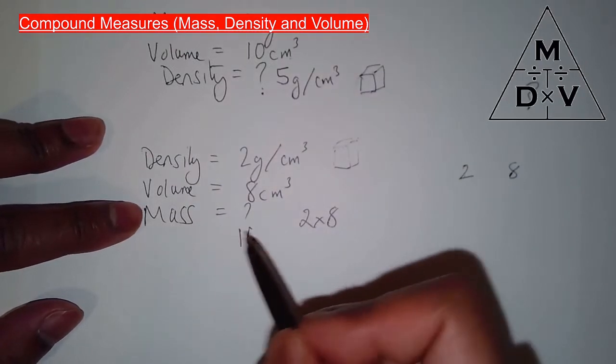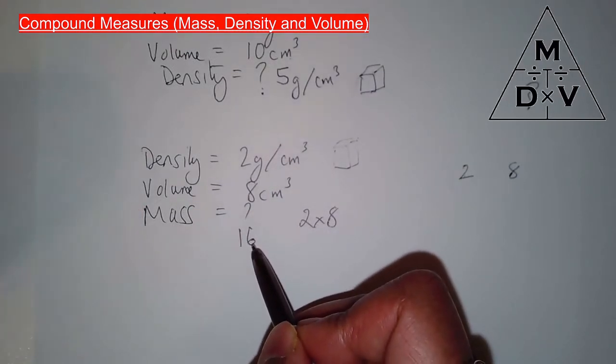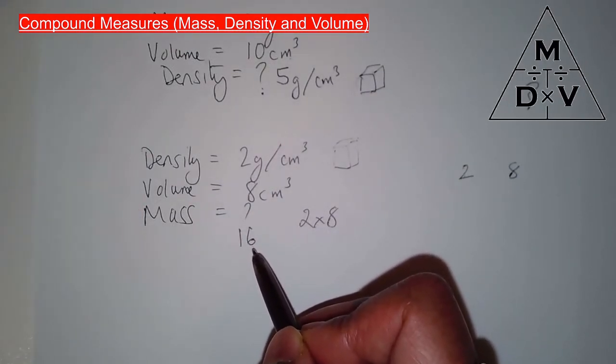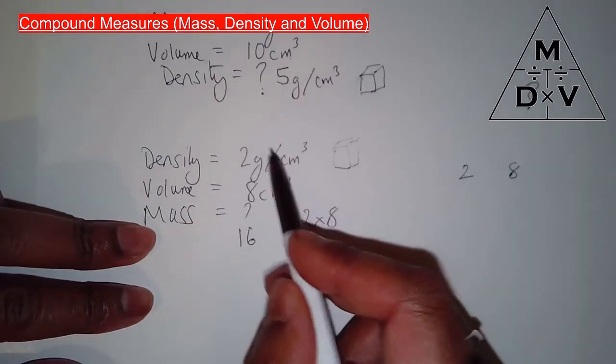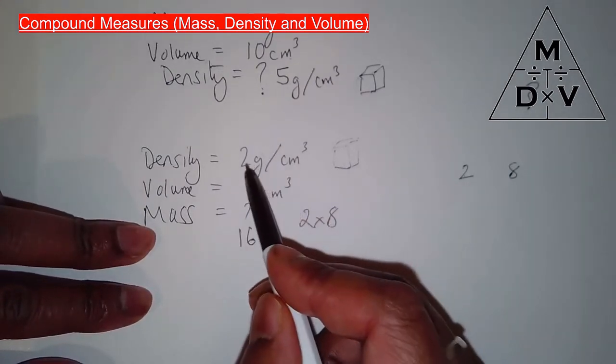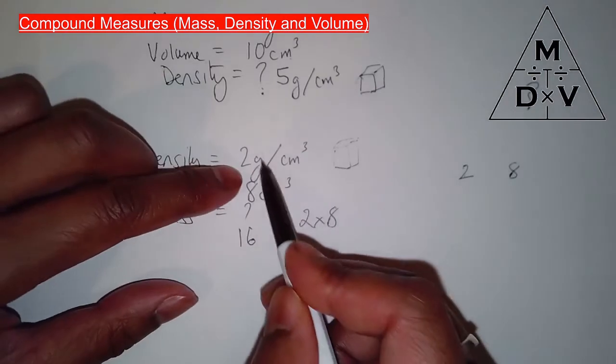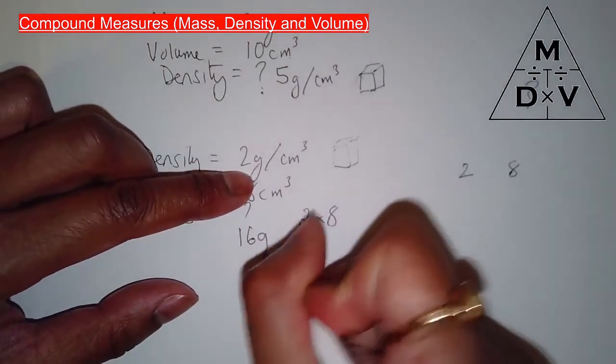What's the unit going to be for mass? Well, mass can be grams, kilograms, tons. But in this case, because the density is given as 2 grams per cm³, grams, that's going to be grams, can't be kilograms.